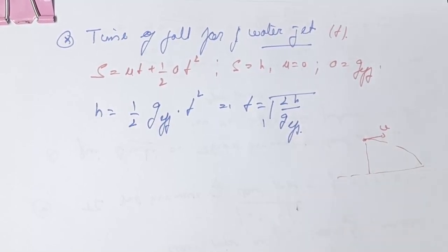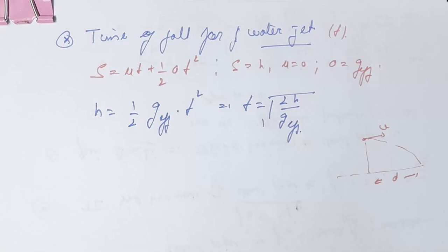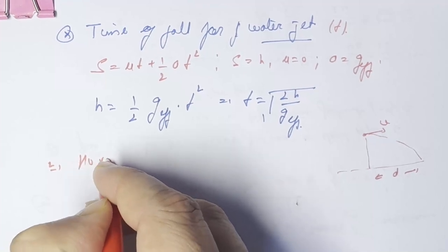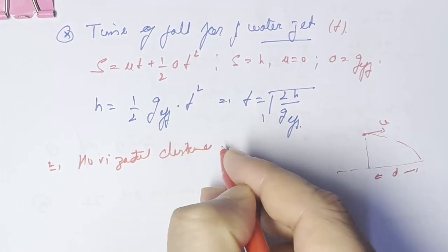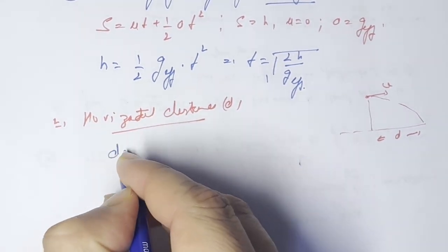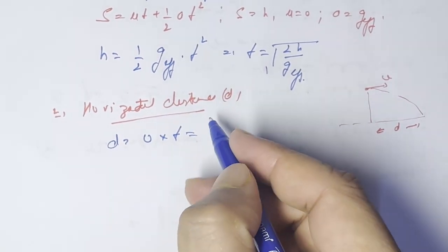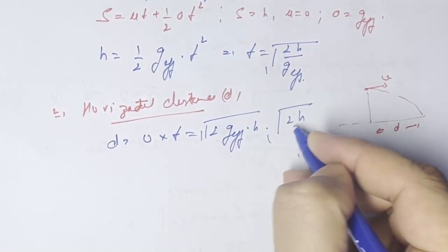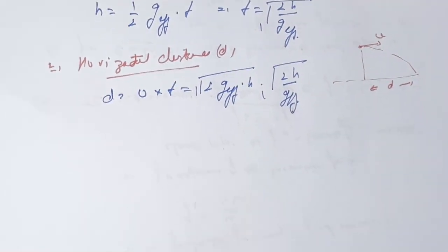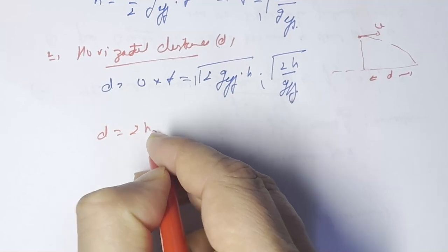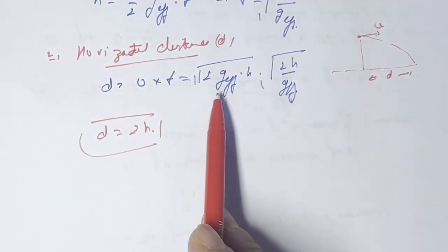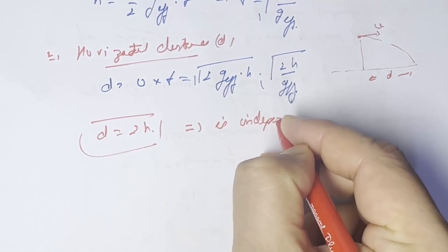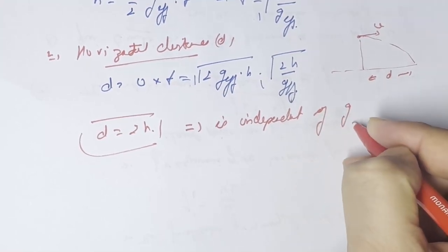The water travels horizontally with velocity v, so the horizontal distance d equals v times t. Substituting: d equals square root of 2 times g_effective times h, multiplied by square root of 2h divided by g_effective. The g_effective cancels out, giving d equals 2h. This expression is independent of g_effective.